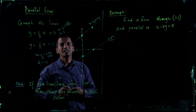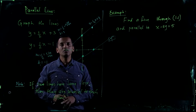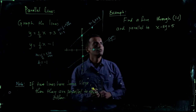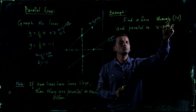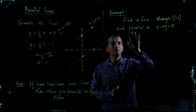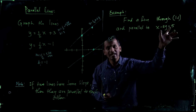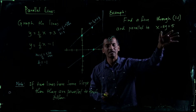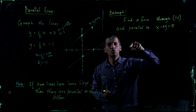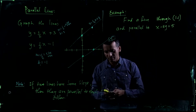So if a question says this line is parallel to this line, then what do you look for? You should look at their slopes — the slopes must be equal. Example: find a line through the point (1, 1) that is parallel to x minus 3y equals 5. So first of all, you need to find the slope of the given line.